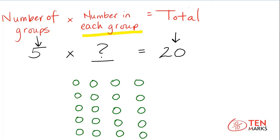Let's look at our completed model. There are five groups represented by five rows. To find the number in each group, just count the number of counters.